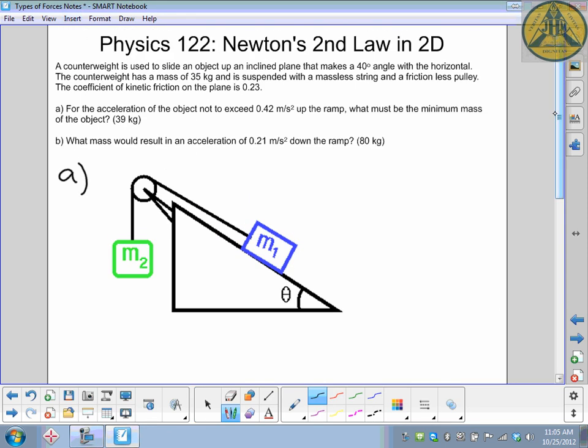So this problem is for grade 12 physics. It's Newton's second law applied in two dimensions, and so that second dimension comes in with the ramp. We've got two connected masses. It's kind of like an Atwood machine where mass 2 acts as a counterweight to pull up M1.